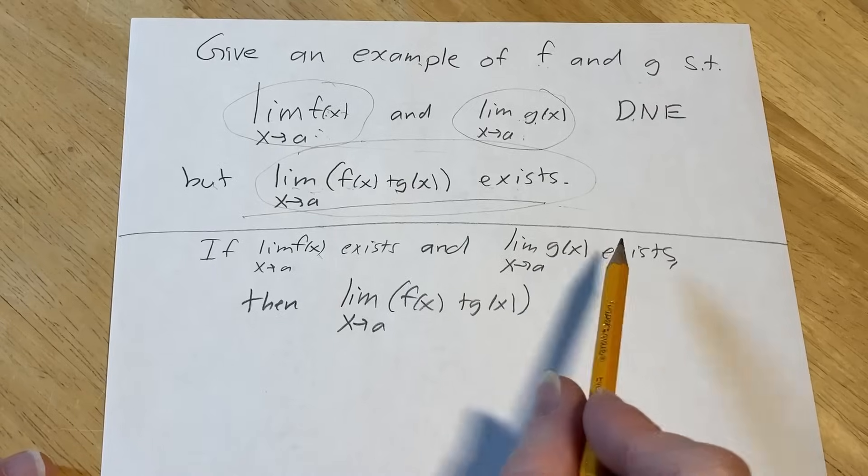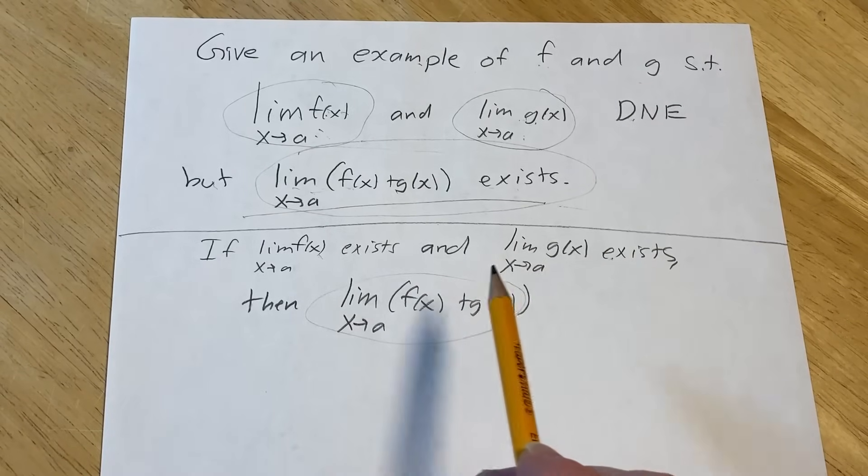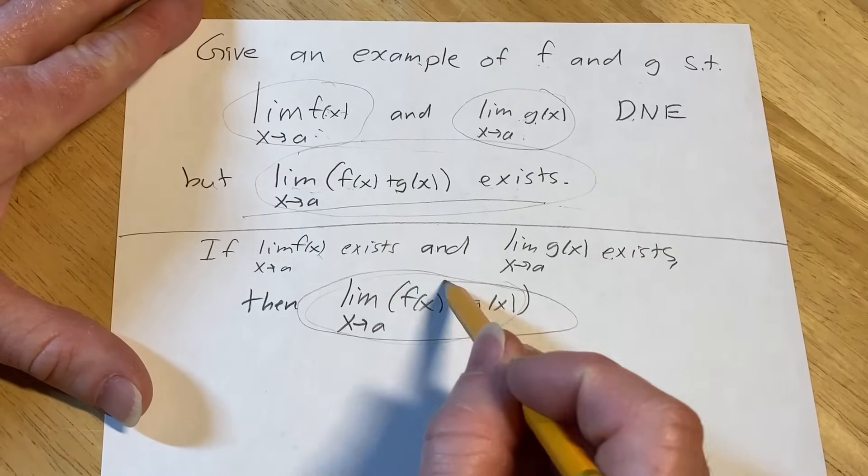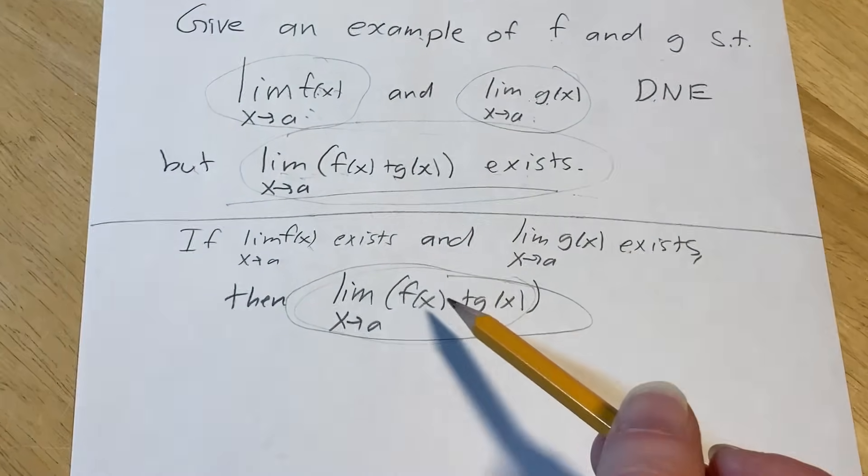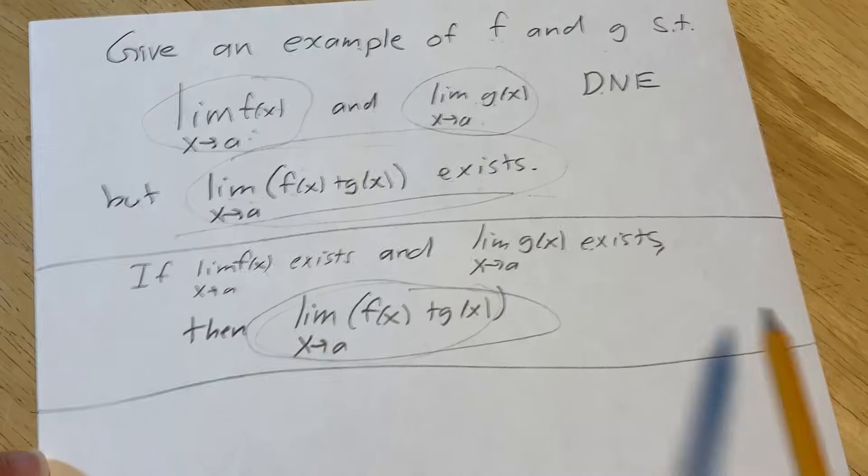This example clearly will prove that you can't go the other way. Just because the sum exists, it doesn't necessarily mean that the individual limits also exist. And that's what this example wants.